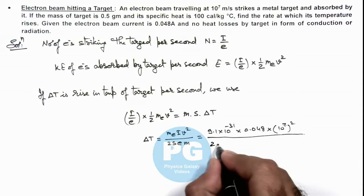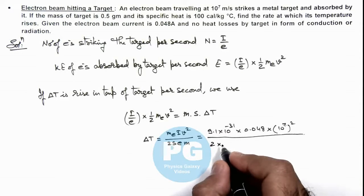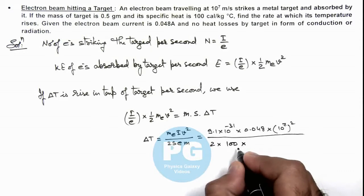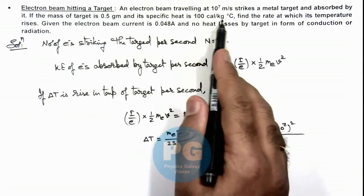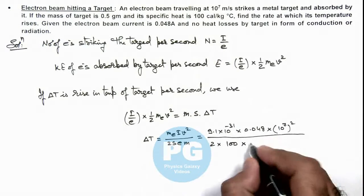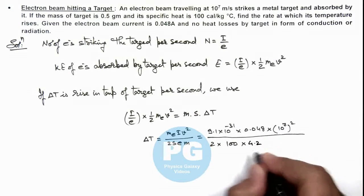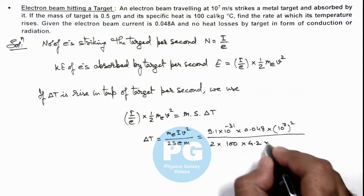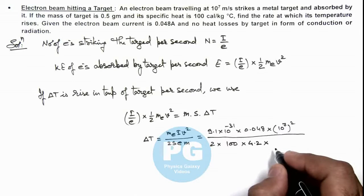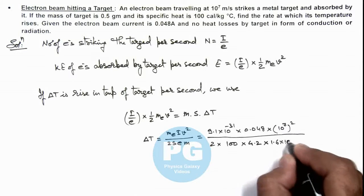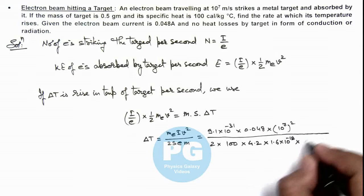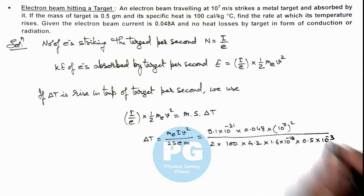Divided by twice of specific heat which is given to us as 100, multiplied by - this is given in calories per kilogram so we have to convert it into joule so we multiply by 4.2 as 1 calorie is 4.2 joules - multiplied by the charge of electron which is 1.6 into 10 to power minus 19, multiplied by the mass of target which is 0.5 gram which is 0.5 into 10 to power minus 3.